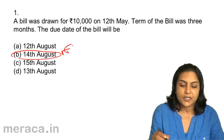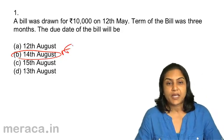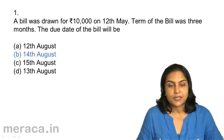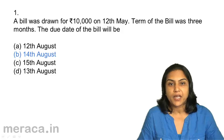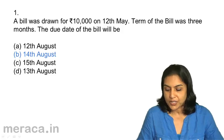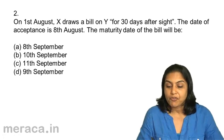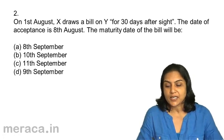Therefore, the correct answer is 1b, 14th August. Next, on 1st August, X draws a bill on Y for 30 days after sight.